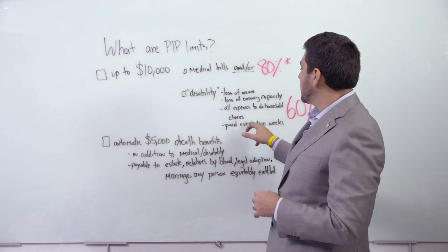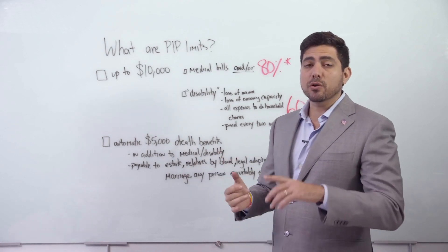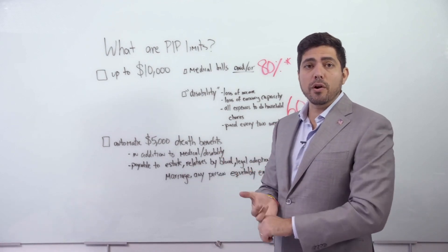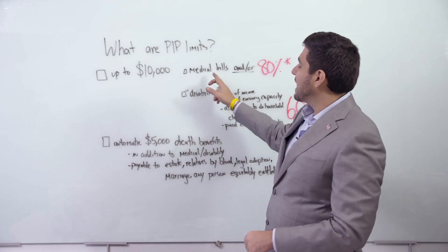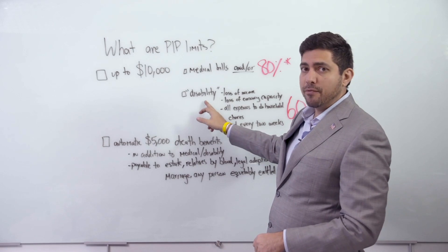This should be paid every two weeks. If you're watching this video, whether you're a doctor, work for a doctor's office, a lawyer, or work at a law office, 99.9% of the time money goes towards medical bills, not towards disability benefits.